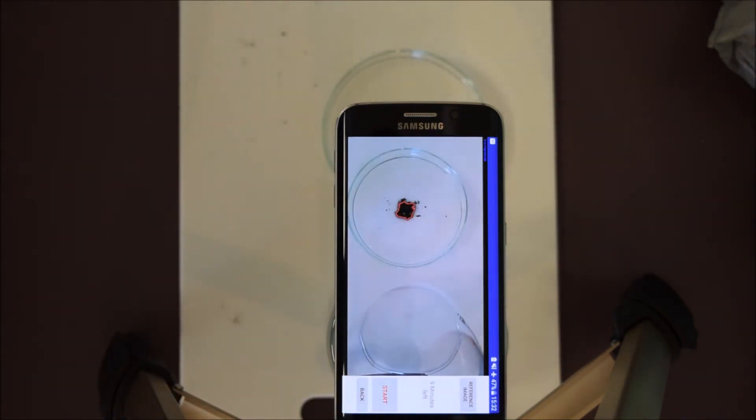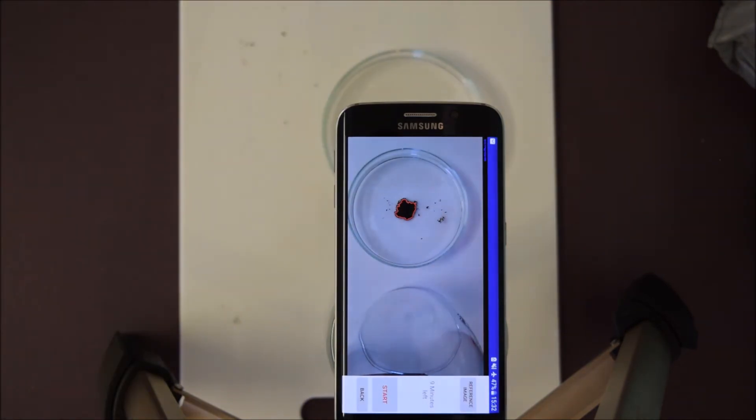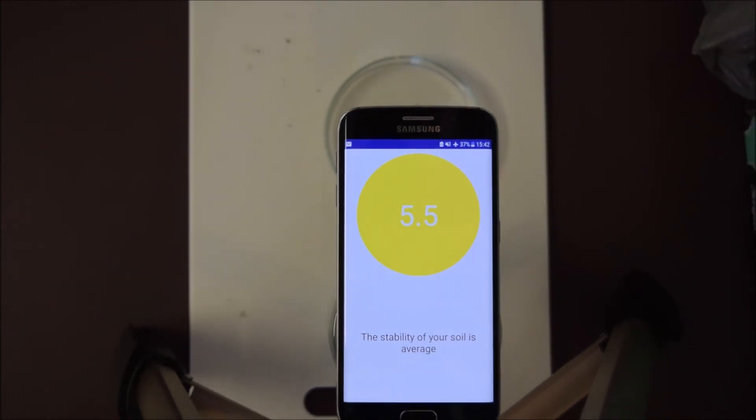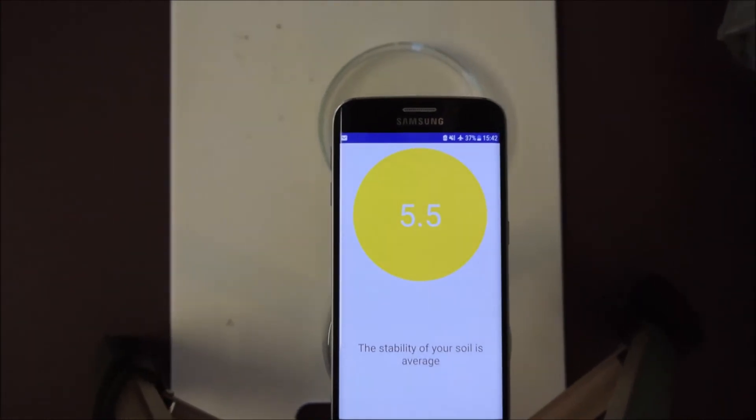The time needed for a full experiment will be 10 minutes. The camera of the phone will be recording the size of the soil aggregate every single second until the 10 minutes are complete. It will also fit the formula that we presented before, and finally, it will return as a result the fit coefficient A.